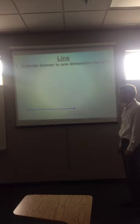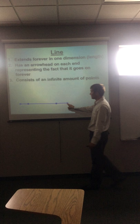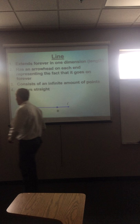A line has one dimension. It extends on forever. A line has two arrows at the end of it, that's how we can tell it's a line. The next thing, consists of infinite amount of points. So there's infinitely many points within this line as we go on forever. And it's always straight, there's no curve up and down to it as we go through.